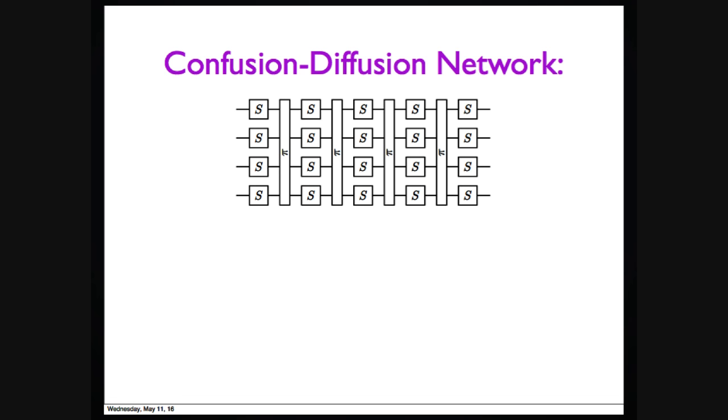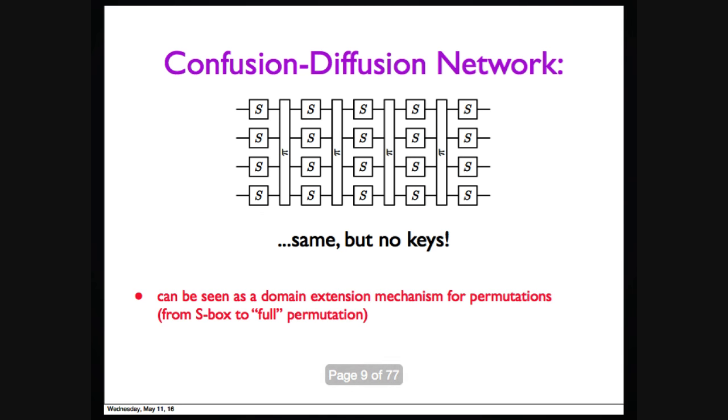In confusion-diffusion network, it's the same, except we don't have the key anymore. Honestly, there's one more difference. In the SPN, the S-box is kind of fixed. But in our work, the S-box is randomly chosen.